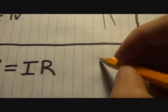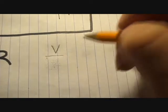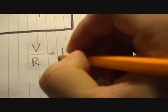So what we do is we do some algebra on it, flip it around. Voltage divided by resistance is equal to current.